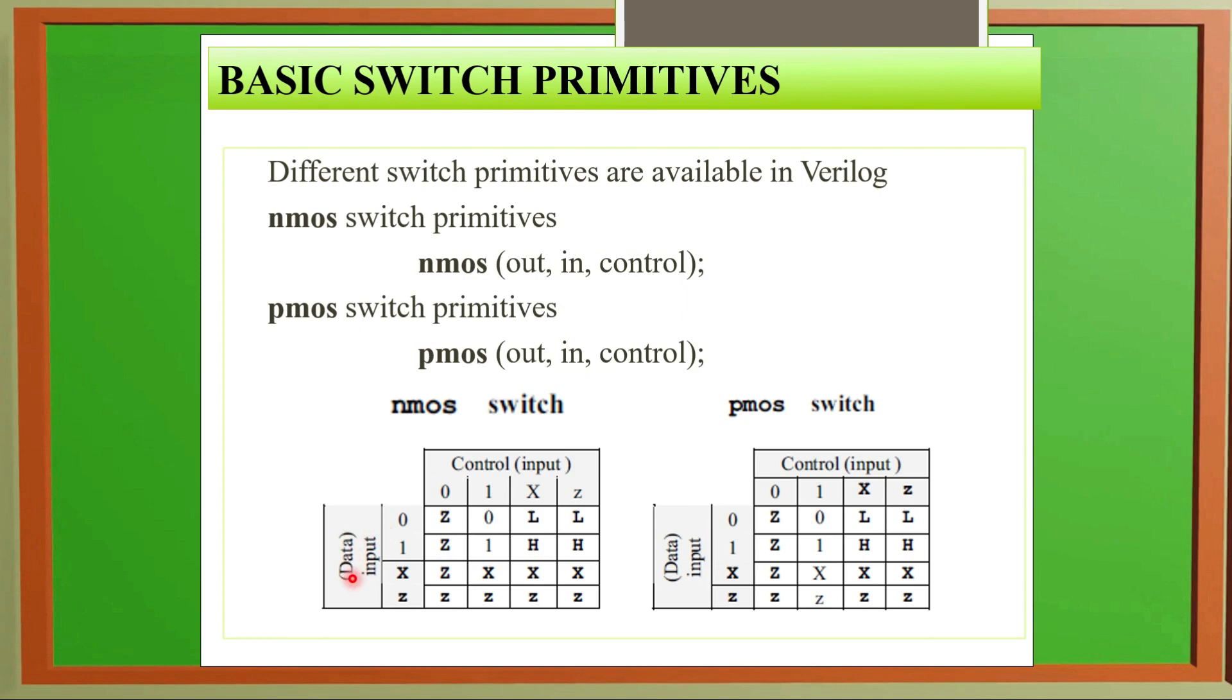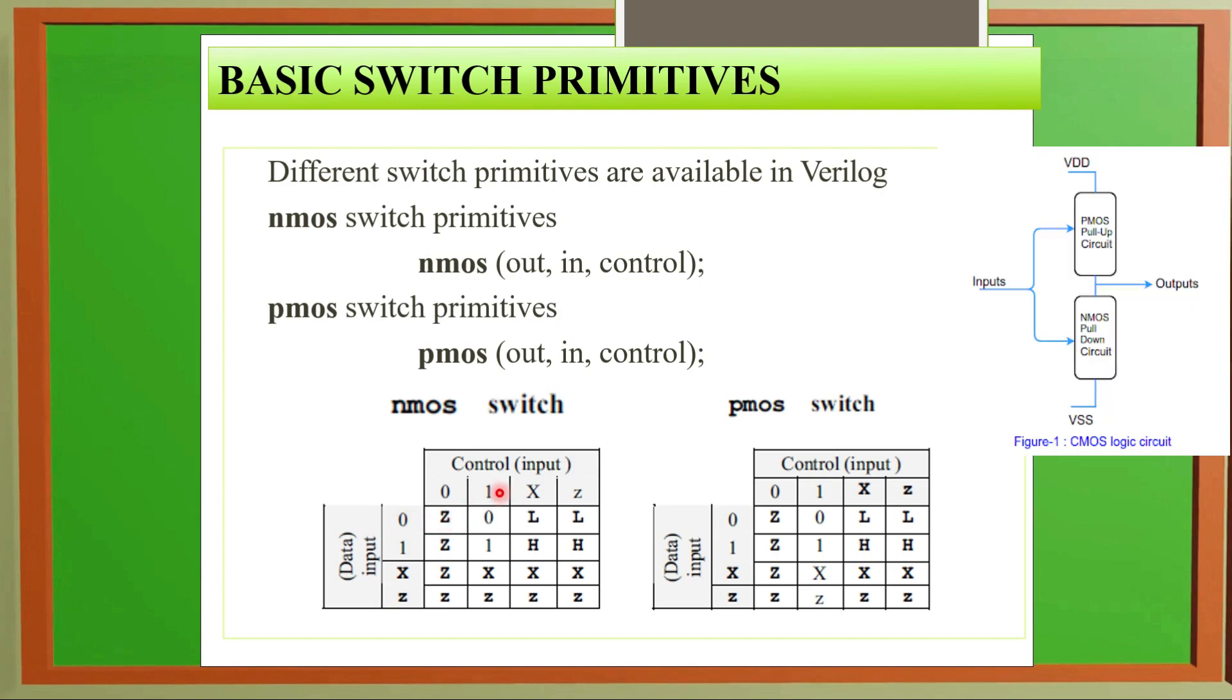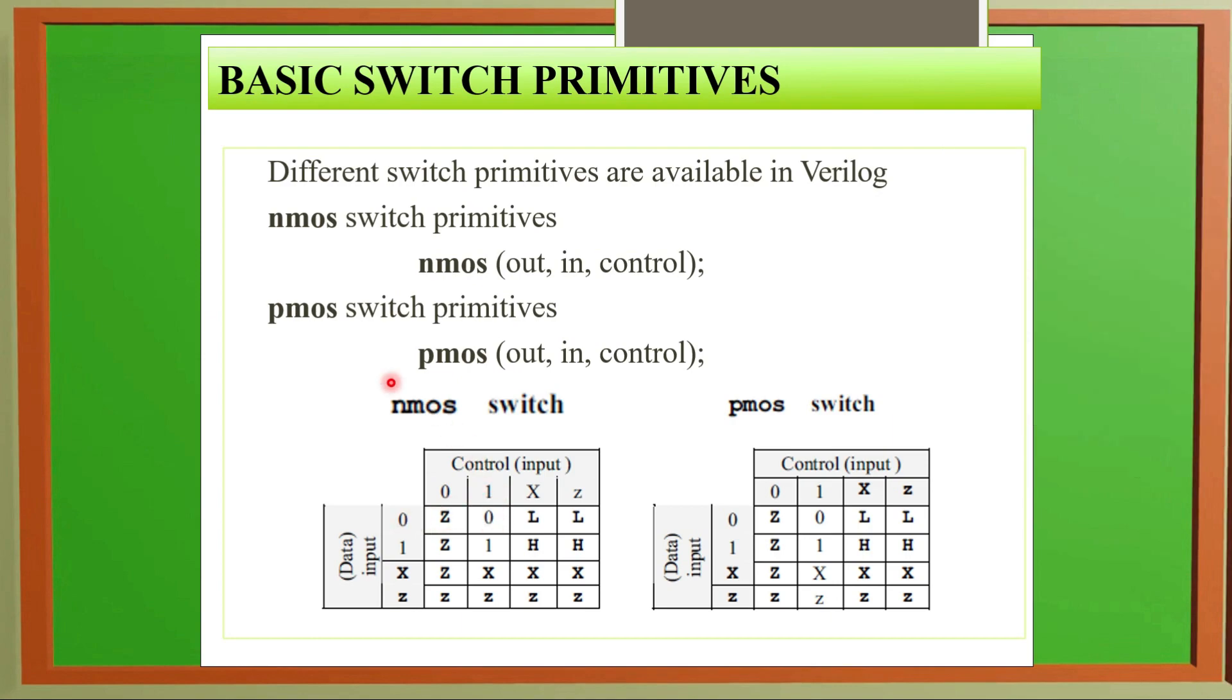If we check the truth table for NMOS switch: this is control, this is data input. Control input may be zero, one, either true or false, true, X, and Z unknown or impedance. At data input we may have zero, one, or unknown condition, or impedance. If control is zero and input is zero, there will be impedance. If control is one and input is zero, it will give zero for NMOS.